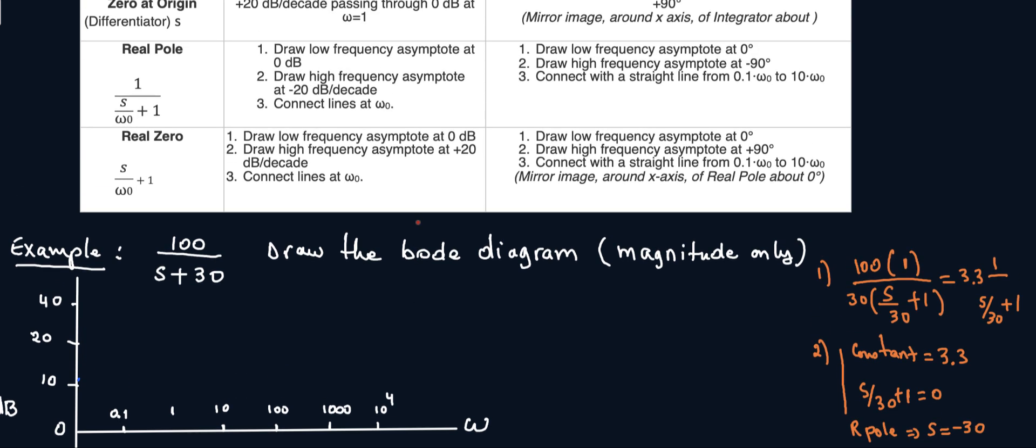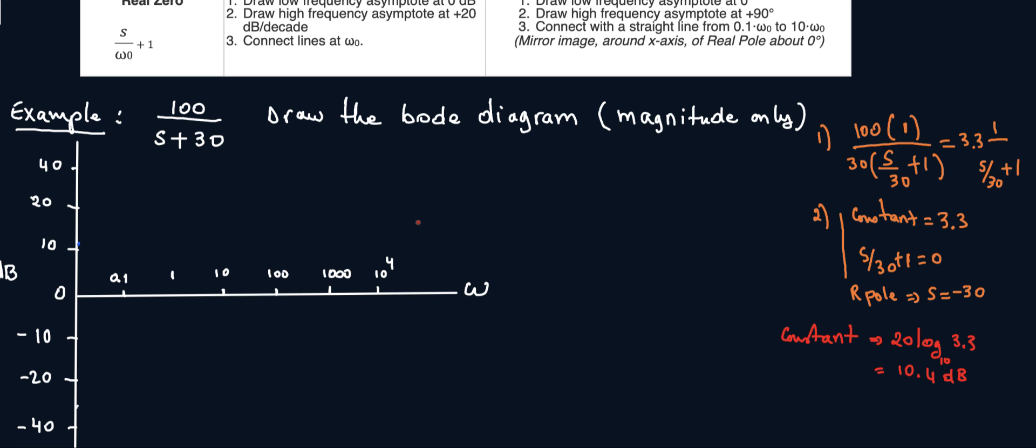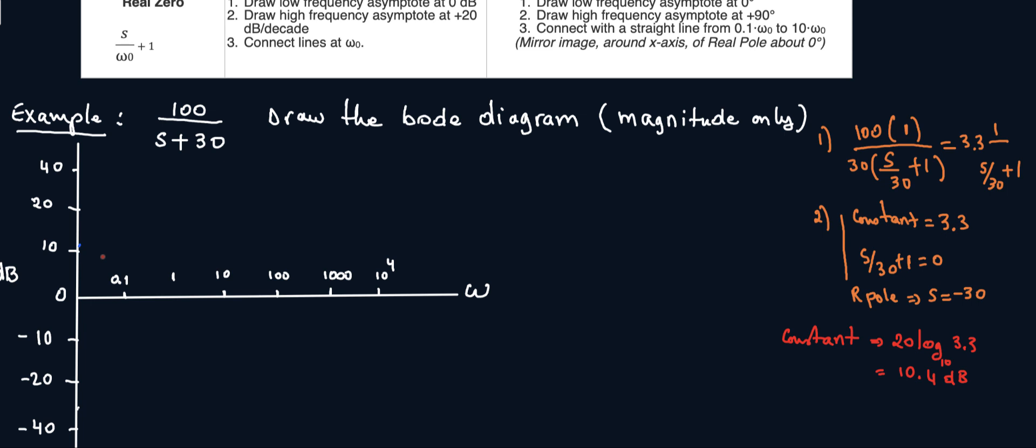I'm going to draw 10.4 dB on the graph. The left hand side here is my dB and this is my omega. So 10.4 is about here, so I'm just going to draw a straight line. It's a constant, there's no slope, nothing, constant 10.4. So this is for my 3.3 right there at my part. We have two parts, a constant and a pole. My constant is a straight line at whatever the magnitude is, so here is 10.4 for my constant.